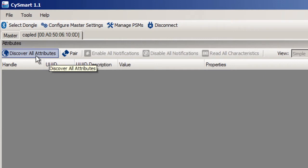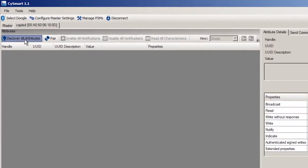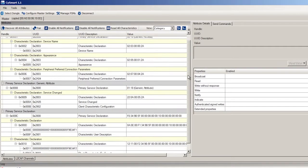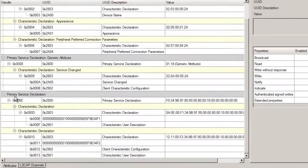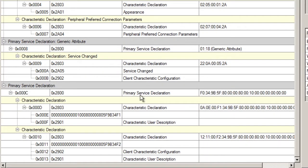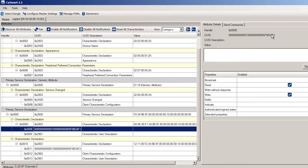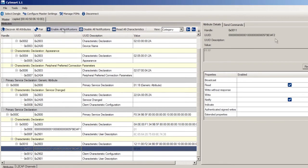I can then tell the CYSmart utility to read the GATT database. Let's see here. I will do discover all attributes. As soon as that is done, I'll see that I've got a complete screen full of attributes. I can see that I've got the service called the primary service declaration that ends in F1. I've got another one ending in F2. Okay, that's good.